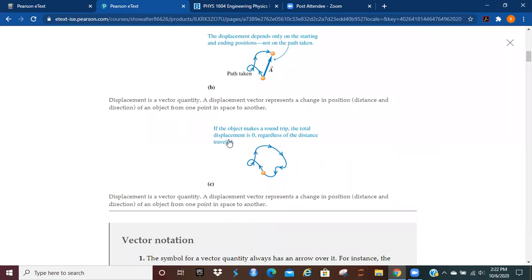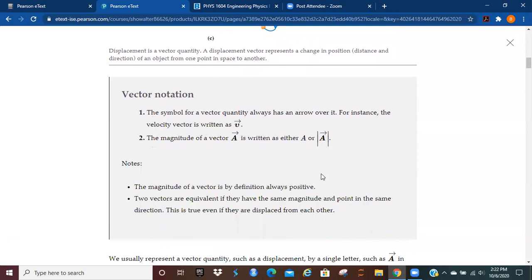And this is a vector quantity. If the object makes a round trip, the total displacement is going to be zero, because you ended up at the same spot that you started with. Magnitude of the vector is going to be zero. Magnitude of the vector is going to be written like in the absolute value, but with the vector notation as well. You know it's a vector because it's got an arrow on top of it, and usually it's written in bold.